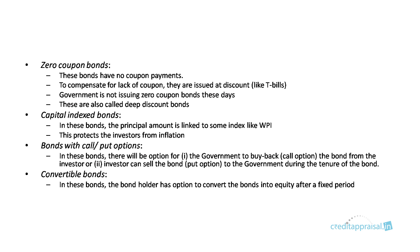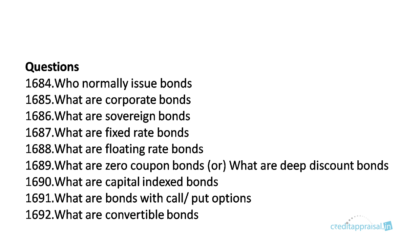So in this chapter, the question is: who normally issues bonds? Governments, companies, state governments, and multiple bodies — all of these issue bonds. We have discussed corporate bonds, sovereign bonds, fixed rate bonds, floating rate bonds, zero coupon bonds, capital indexed bonds, bonds with call and put options, and convertible bonds.